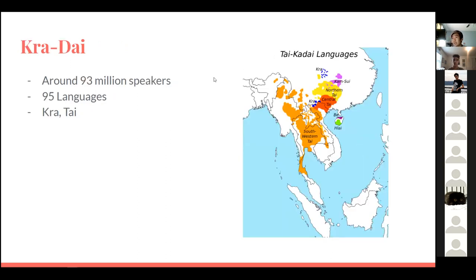Now we have Kra-Dai. It goes by many names depending on who you ask. Its name comes from its two main branches. It is a very tonal language family — most of the languages that exist here are very tonal, which is very common among the Eastern language families. It encompasses a lot of Southeast Asia, Northeast India, and also a bit of Southern China. There are 95 languages and around 93 million speakers, and a lot of this is comprised of Thai and Lao, the main languages spoken in Thailand and Laos.